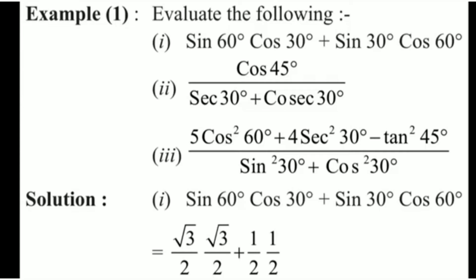The first question is sin 60° · cos 30° + sin 30° · cos 60°. From the table we know the value of sin 60° is √3/2 and cos 30° is also √3/2. We replace them with their values. Then sin 30° is 1/2 and cos 60° is again 1/2. So our expression becomes (√3/2) × (√3/2) + (1/2) × (1/2).